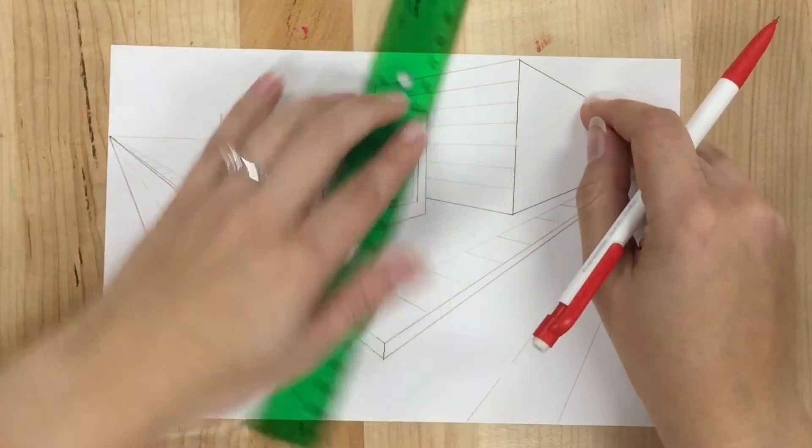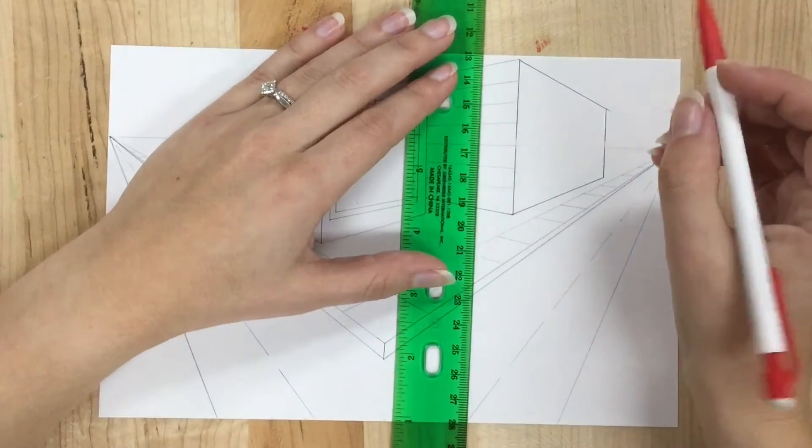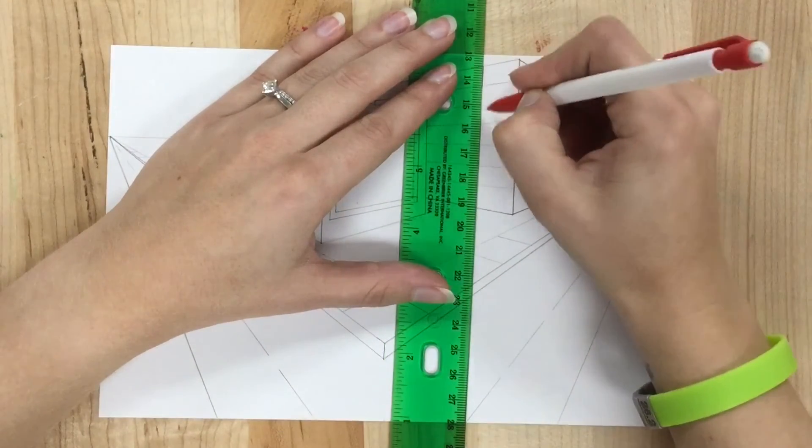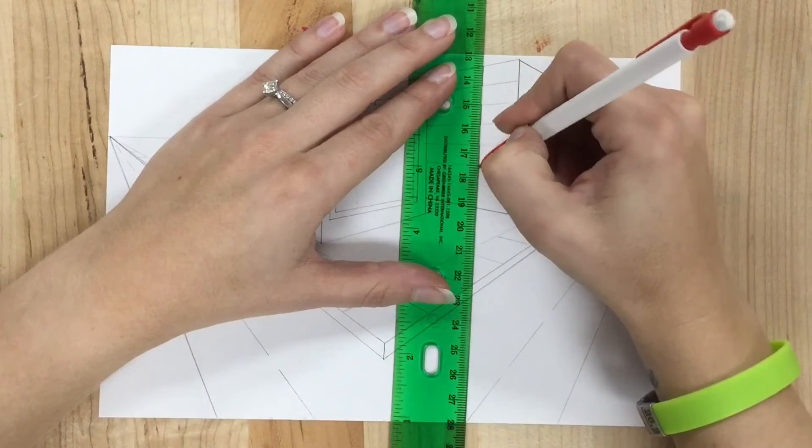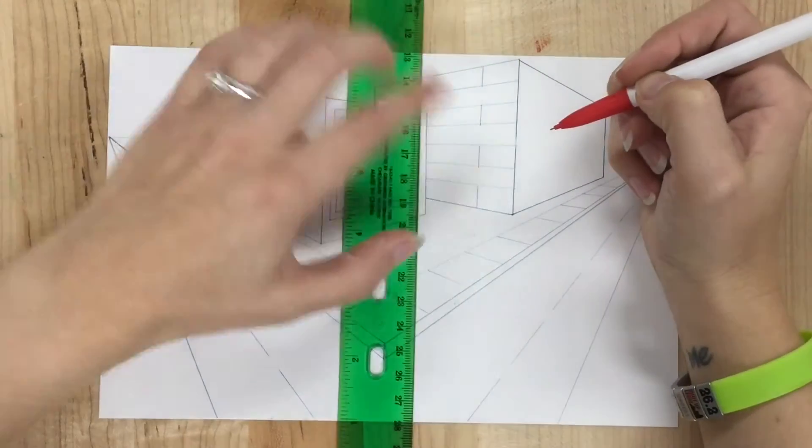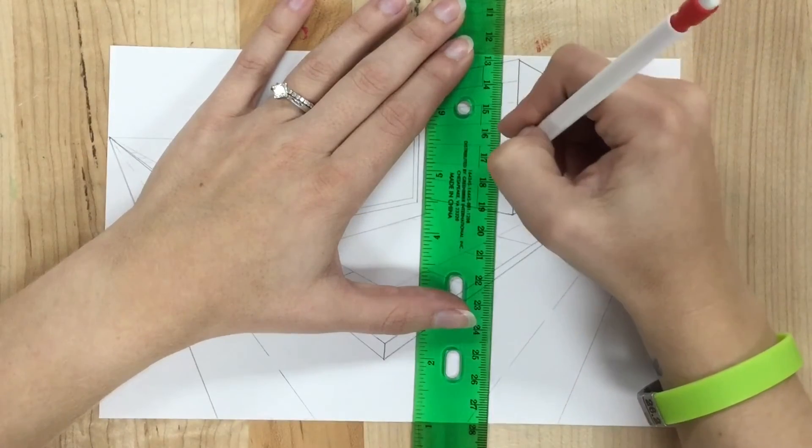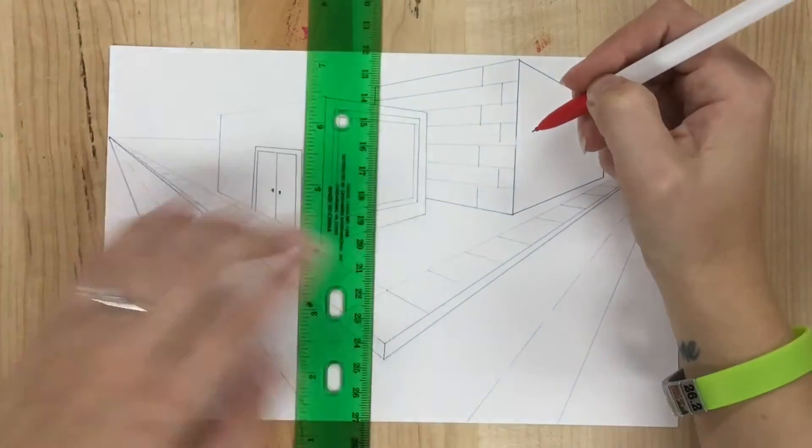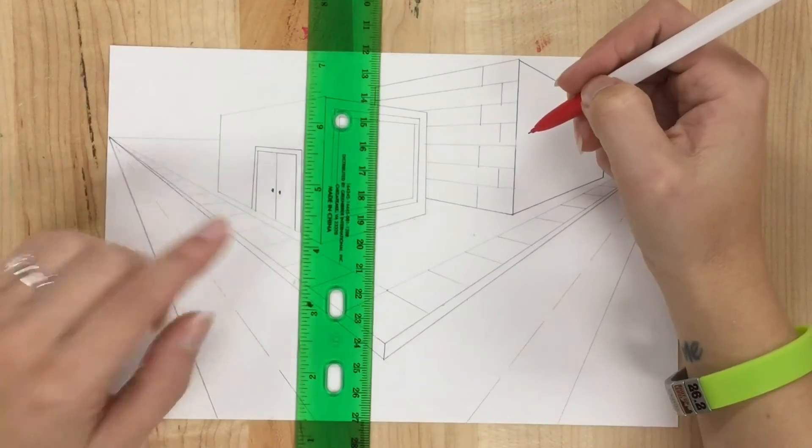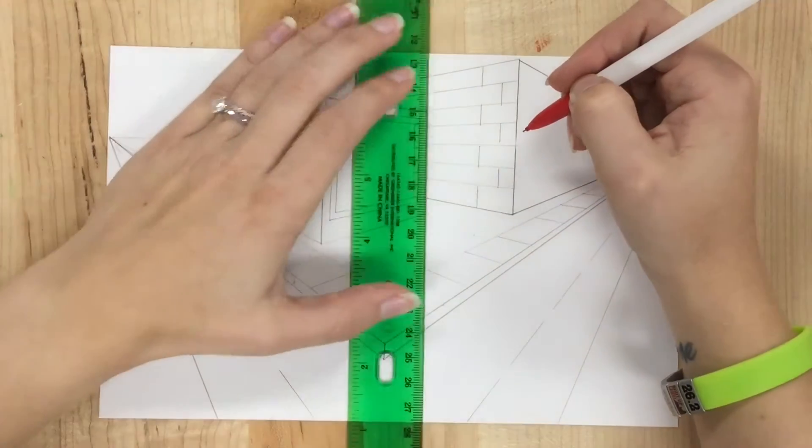And now bricks are staggered every other, so I can decide every other one is going to be the right size. And then go back in and half that and do every other opposite one as the small size. Just like my sidewalk, they're going to get smaller as they go farther away.